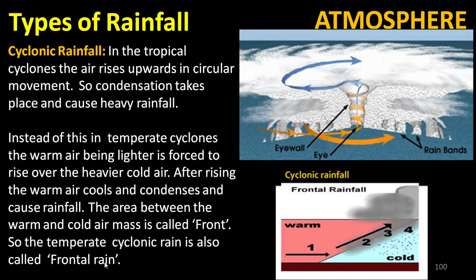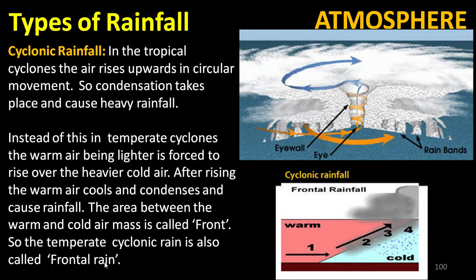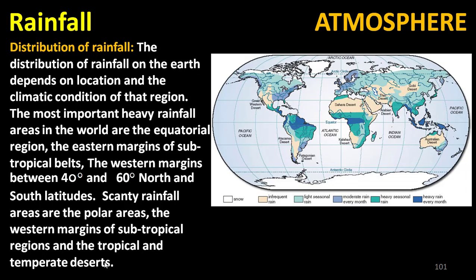In cyclonic rainfall, in tropical cyclones the air rises upward in a circular movement, condensation takes place, and heavy rainfall occurs. In temperate cyclones, the warm air being lighter is forced to rise over the heavier cold air; after rising, the warm air cools and condenses, causing rainfall. The area between the warm and cold air mass is called a front, and the temperate cyclonic rain is called frontal rain.